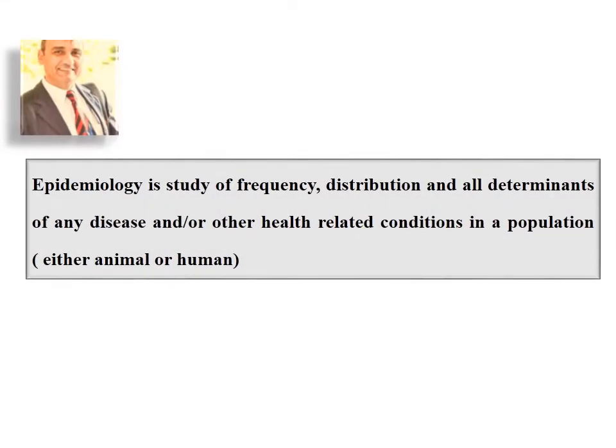Epidemiology is the study of frequency — meaning the number and percentage of disease occurrence — as well as distribution, which means the spreading of disease over certain spaces and areas, and all determinants of any disease or other health-related conditions, such as age, sex of different animals and humans, as well as different pathogenic risk factors. This study occurs over a population, either animal or human.